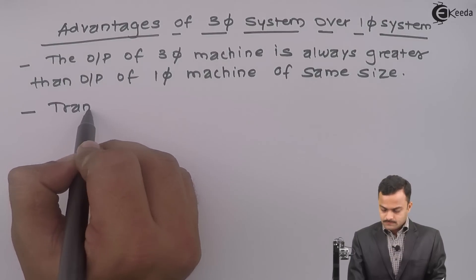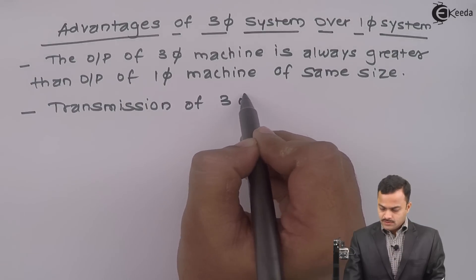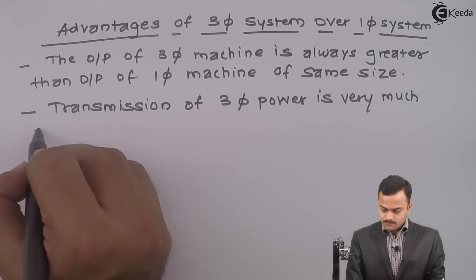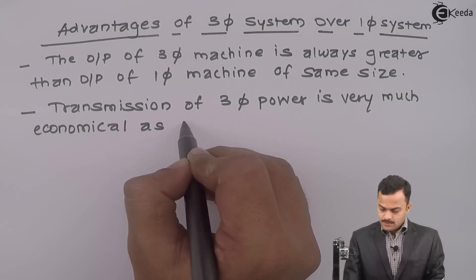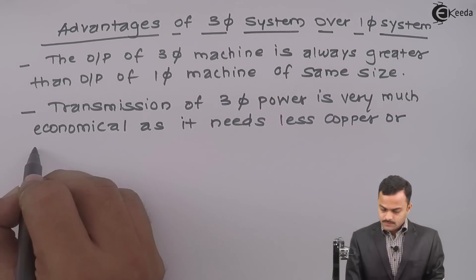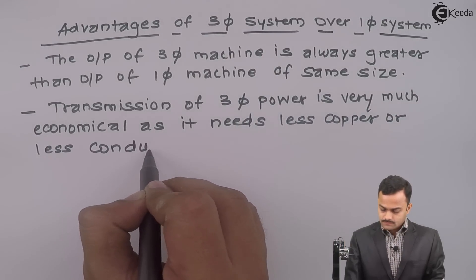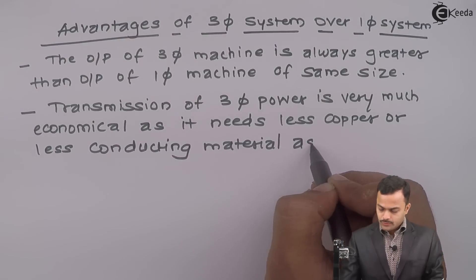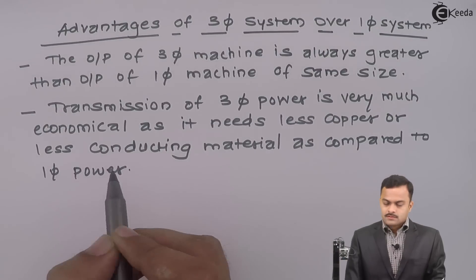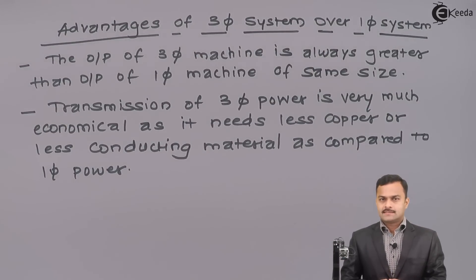Second advantage. Transmission of three phase power is very much economical as it needs less copper or less conducting material as compared to single phase power. This is but obvious because we can raise the voltage in three phase system. If you transmit the power at high voltage, there will be less core losses happening which means less conducting material required.